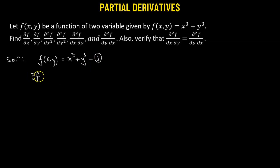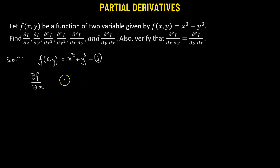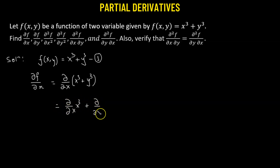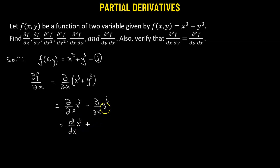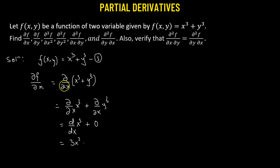First, let's find the partial of f with respect to x. Whenever we calculate the partial derivative with respect to x, we consider x to be the variable and y is treated as a constant. So we use the usual method of differentiation. Taking the partial derivative with respect to x of x³ + y³ gives us: partial of x³ plus partial of y³ with respect to x. Since y is constant, the second term is zero, and the derivative of x³ is simply 3x². So the partial of f with respect to x equals 3x².